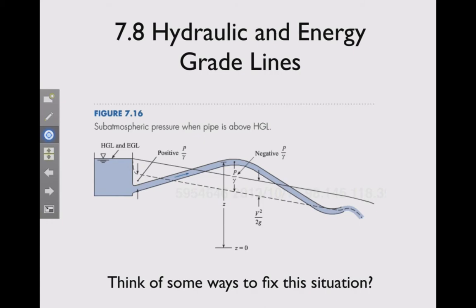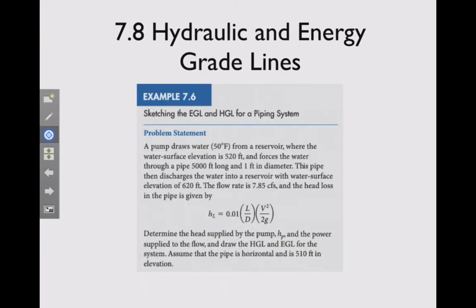Okay, so that's a situation that we would identify in the engineering system where we have a problem. Think of ways to fix this situation, well one would be to straighten out the pipe, or two, maybe raise this tank up further. So those are two ways to fix the situation. Have a look at this problem, example 7.6 at the end of the book, which will show you how to draw energy and hydraulic grade lines, and use them in systems. So that's it for 7.8, and that completes chapter 7, thank you.